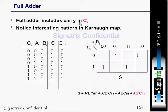Now, a full adder includes carry-in (CI). In a full adder, instead of having two input ports, we have three input ports: one is A, one is B, and one is carry-in. Notice the interesting patterns in Karnaugh maps.